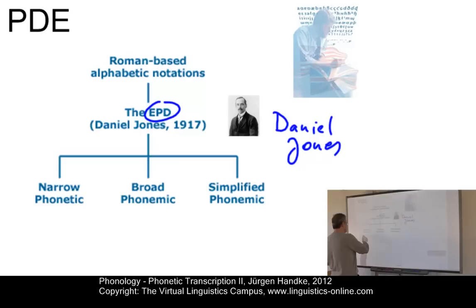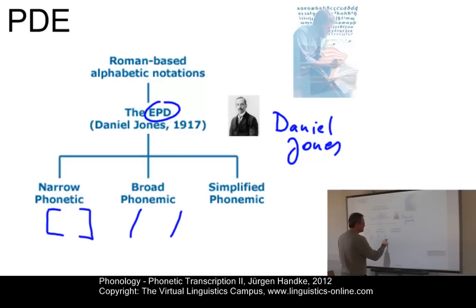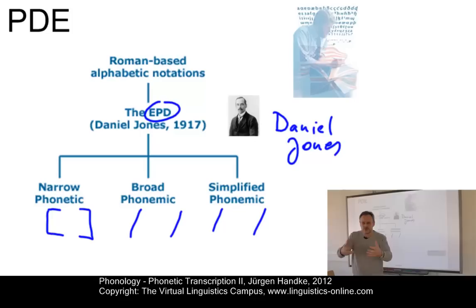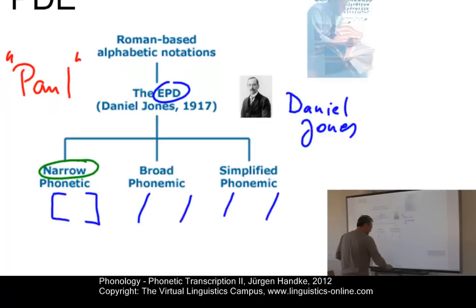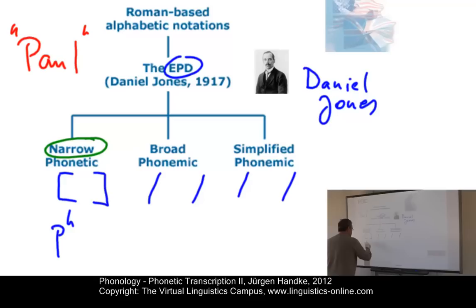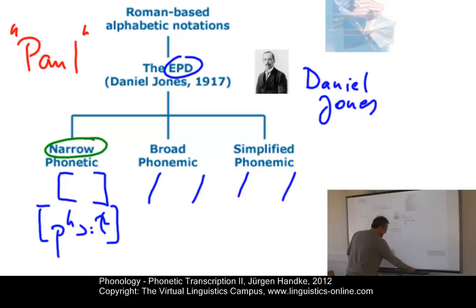Let's look at a narrow phonetic transcription first. Narrow phonetic transcriptions are represented in angular brackets, whereas phonemic transcriptions are always presented within slashes — that's a significant difference. If more symbols than phonemes are used, the transcription is per se not a phonemic one but a phonetic one — alternatively called allophonic or narrow. Taking the word "Paul" as an example, in a narrow transcription we would mark that the plosive is aspirated and that the final alveolar lateral is velarized. Diacritic symbols are added to the standard set of symbols, along with the colon which indicates length.